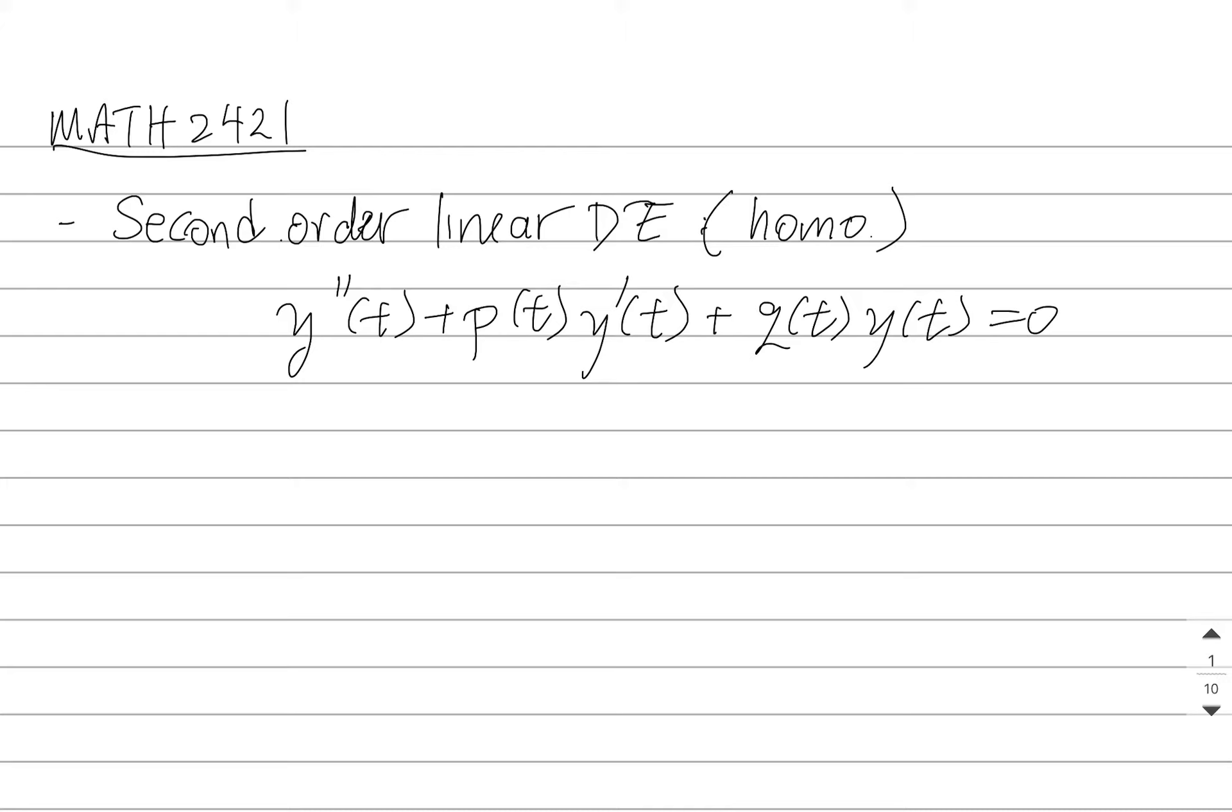The standard form of a second-order linear equation looks something like this. There are going to be some functions here, P and Q, and we're going to assume that these functions are continuous on an interval. We'll call it A to B.